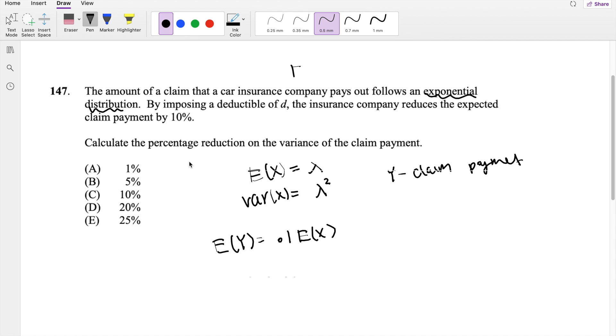Calculate the percentage of the reduction on the variance of the claim payment. So they're saying, what is the variance of Y? Well, we know that if expectation of X is equal to lambda and the variance of X is equal to lambda squared, we just square the whole thing. So same idea here, technically.